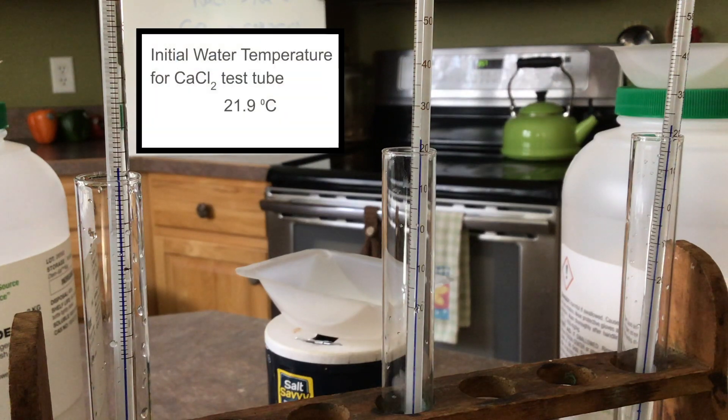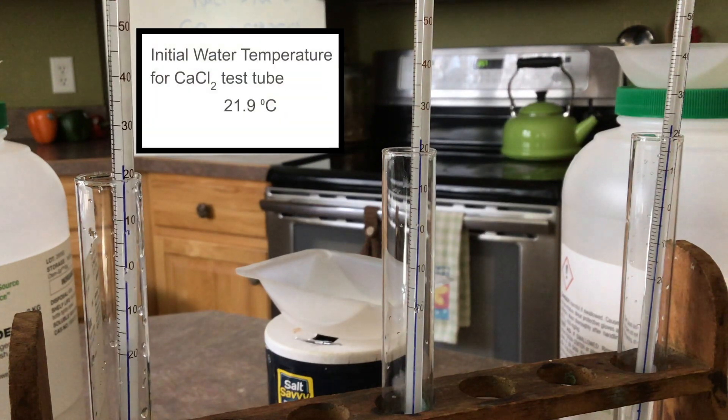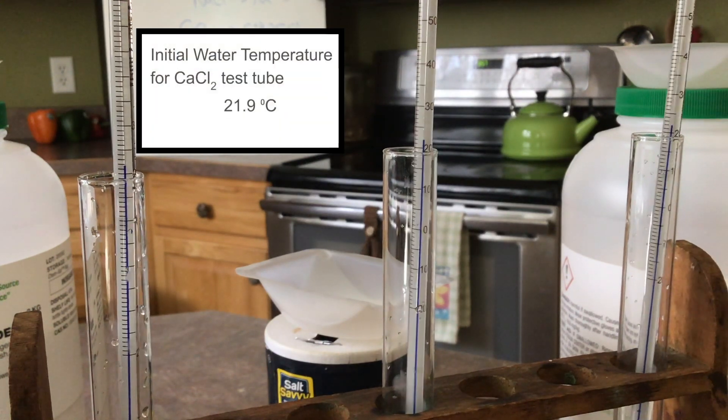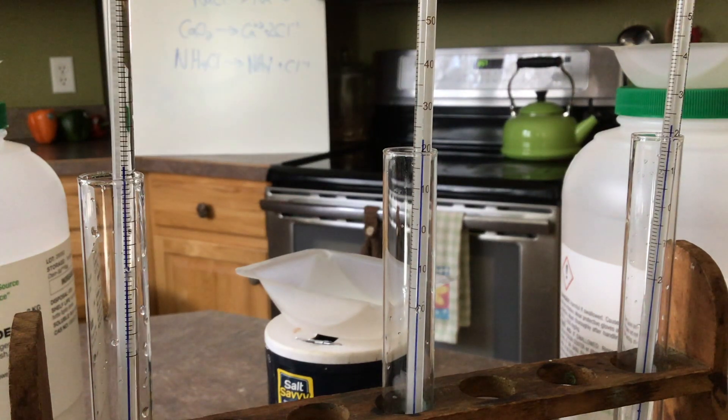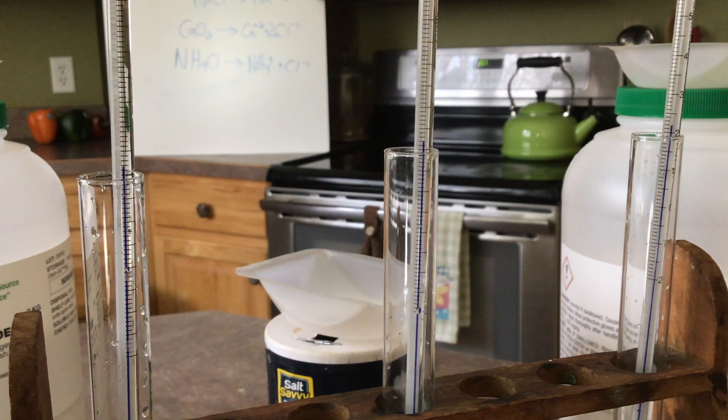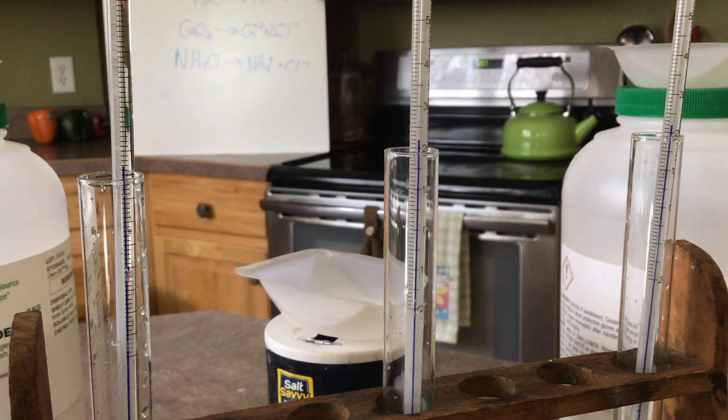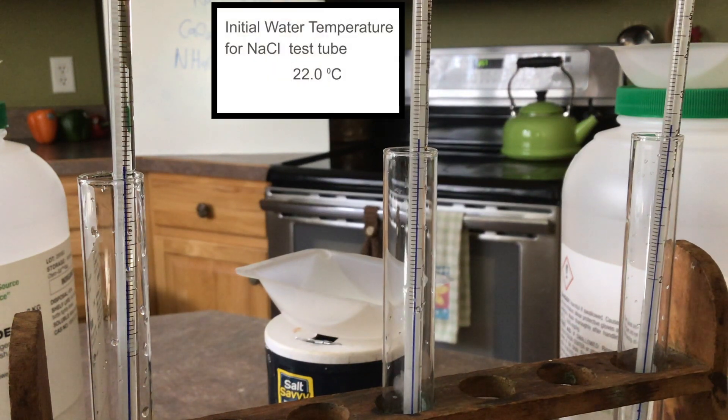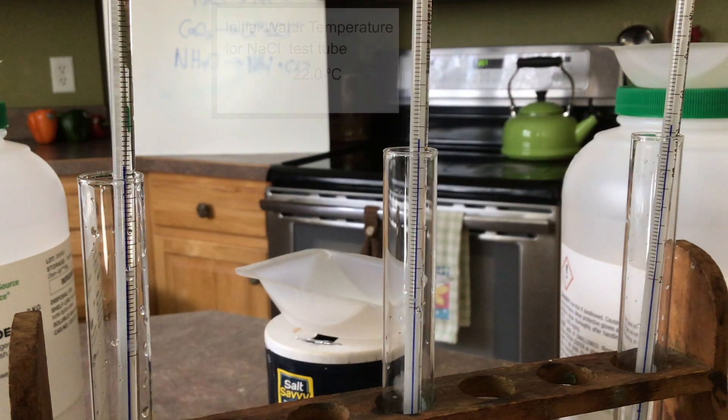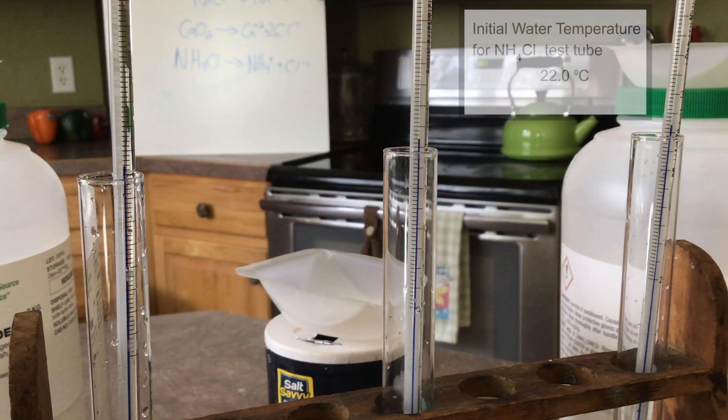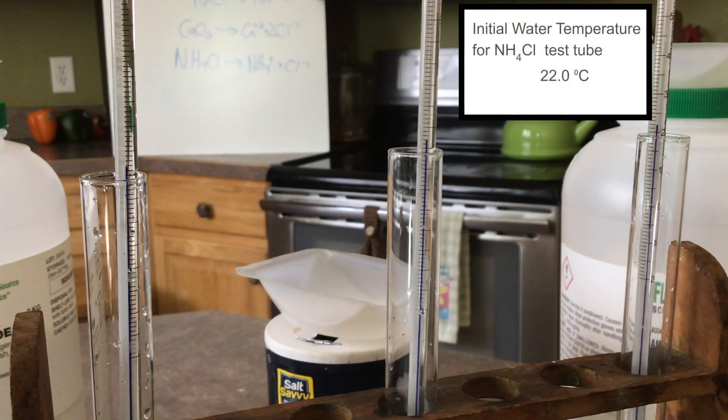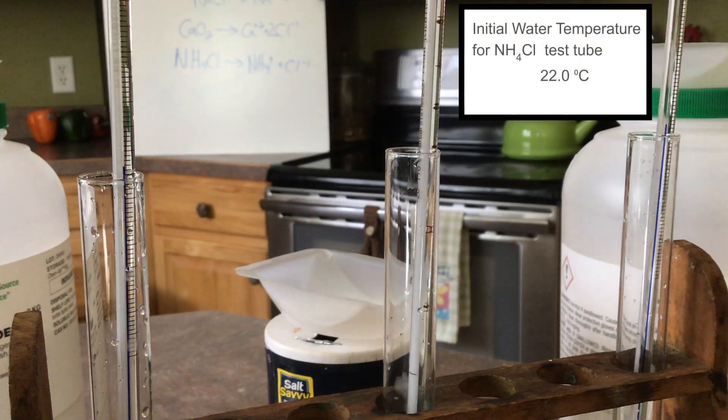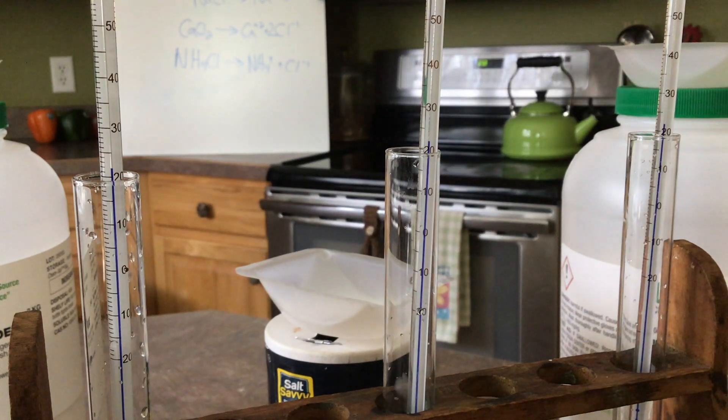As you can see on the left, our calcium chloride temperature is at about 21.9 degrees. Our sodium chloride test tube is at about 22.0 degrees Celsius. And the test tube that we will eventually put the ammonium chloride in is at about 22.0. Now let's go ahead and add the salts and see what happens.